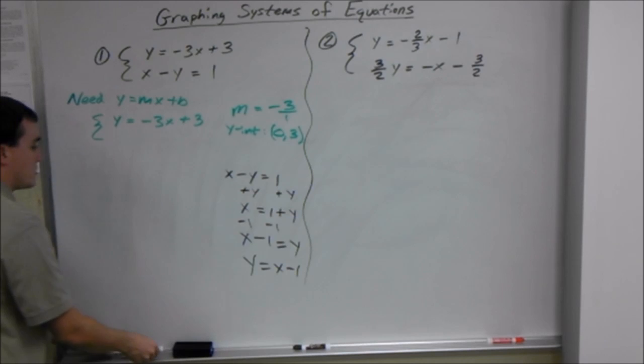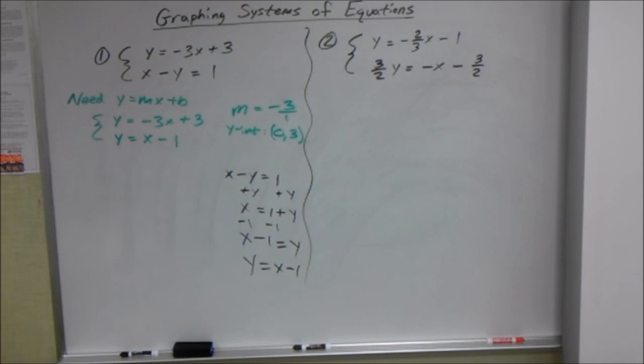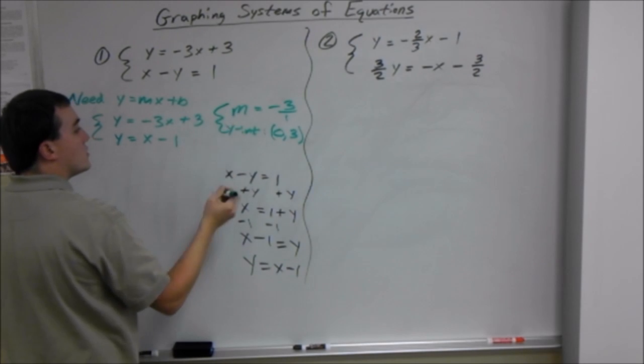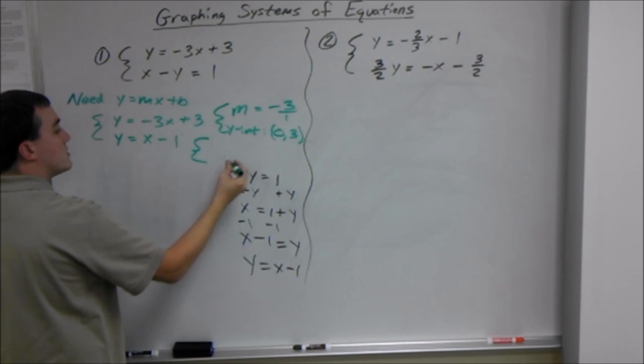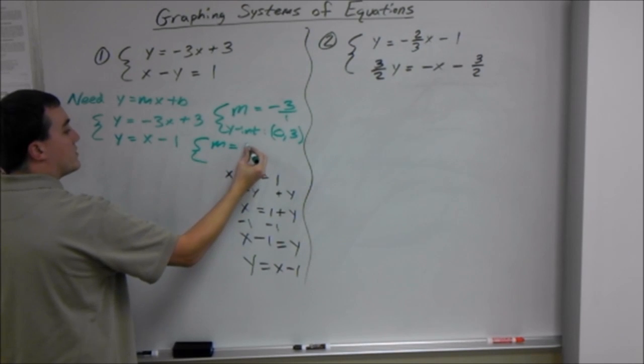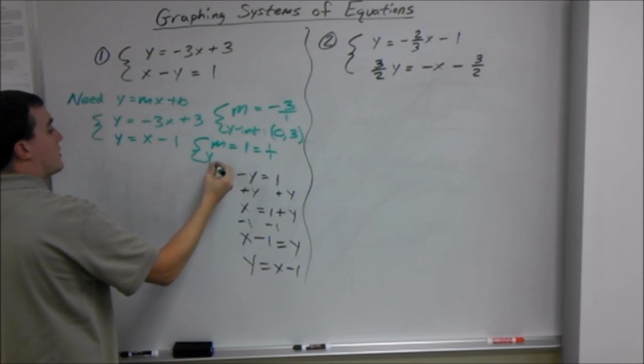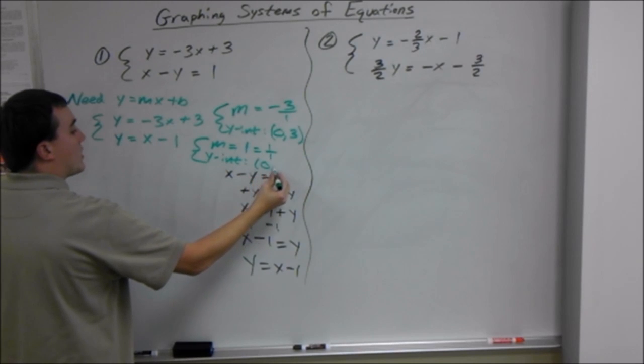Alright, so that's our second equation. Y equals x minus 1. Now we have to figure out where these hit by graphing. So for our first one, we had a slope and y-intercept of this. Now for our second one, we have a slope of 1, or 1 over 1, and a y-intercept of 0 comma negative 1.